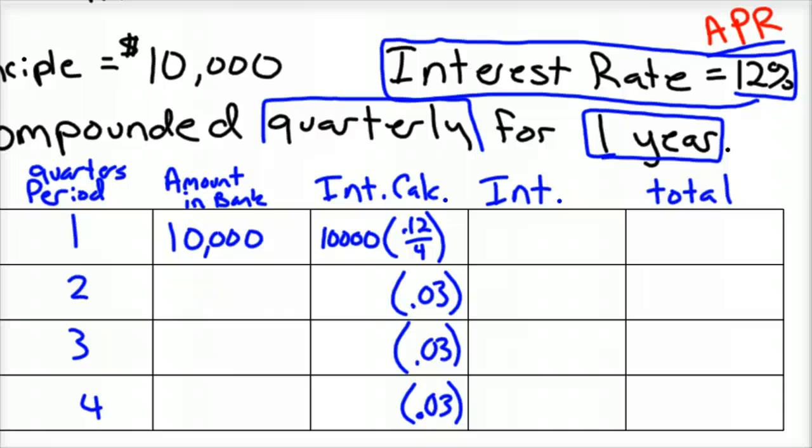You multiply that together, and you get $300 in interest for that first quarter. So at the end of the first quarter, we have $10,300 worth of interest. So that's going to be our new amount when we start quarter two.